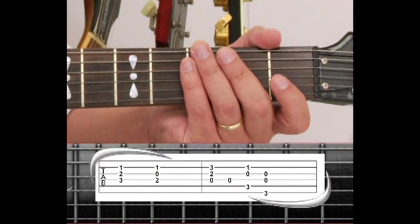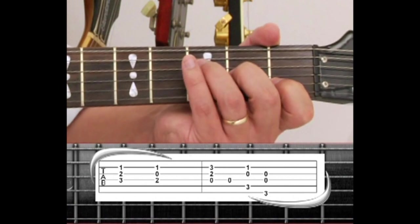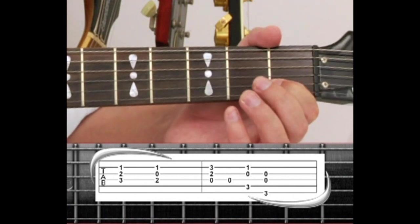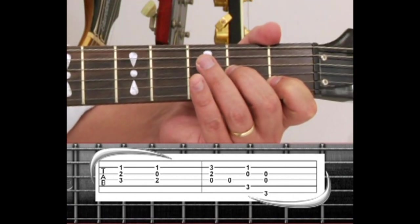Phrase 8 ends the chorus with a descending chord progression, starting with the F. 2nd string 1st fret, 3rd string 2nd fret, and 4th string 3rd fret.